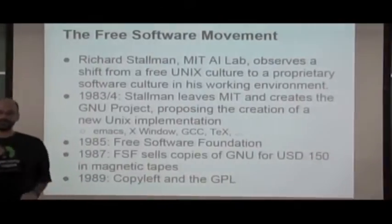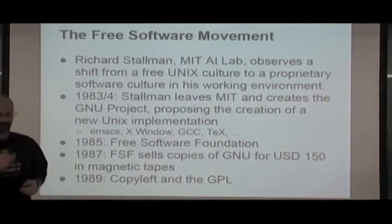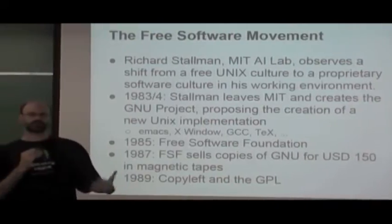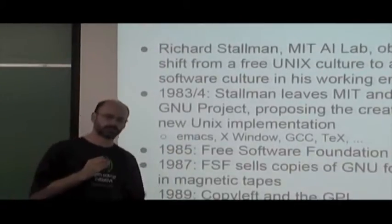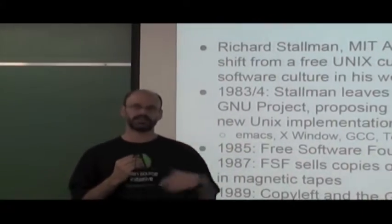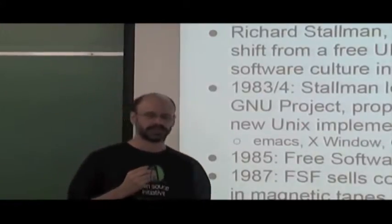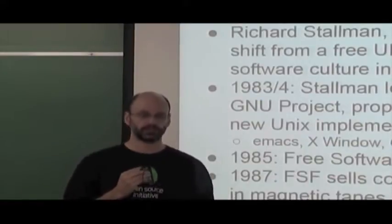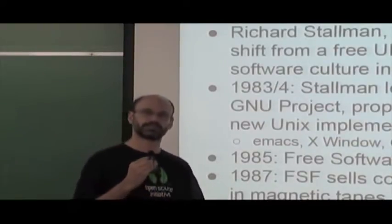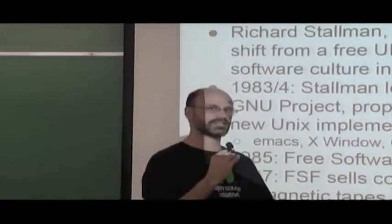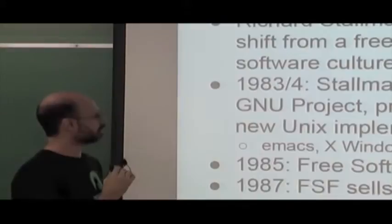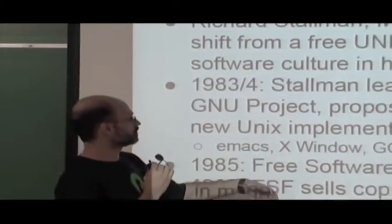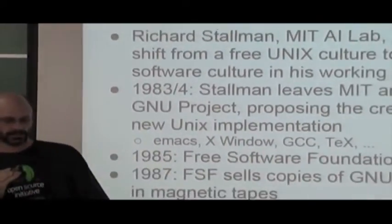Things got more organized when Richard Stallman, a programmer at the MIT AI lab, observed a shift from a free Unix culture to a proprietary software culture in his working environment. Around 1983-1984, he left MIT and created the GNU project, proposing a new free and open Unix implementation. Its first versions included the Emacs text editor, the X Window system, the GCC compiler, and the TeX tool.